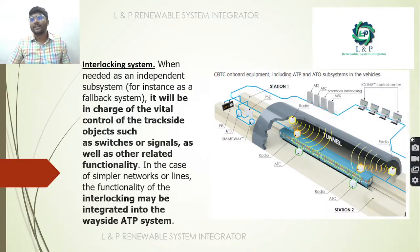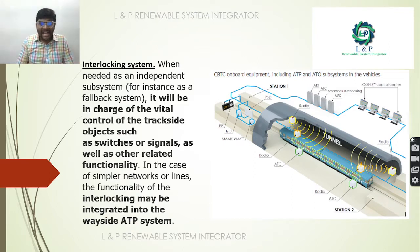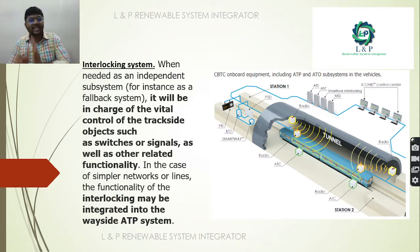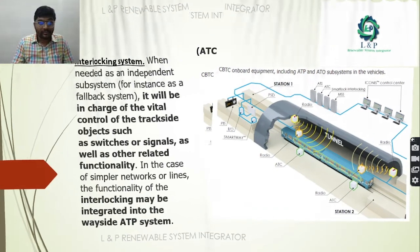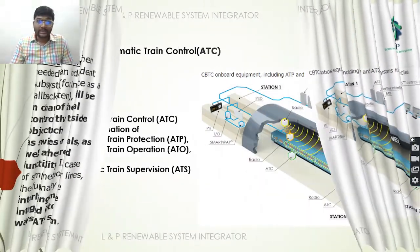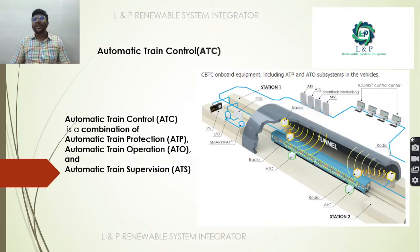The interlocking system is in charge of the vital control of trackside objects such as switches and signals, directly related to operational functionality. It is integrated into wayside ADP systems. ATC (automatic train control) is a combination of ATP systems.